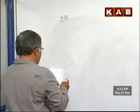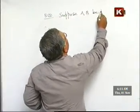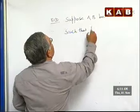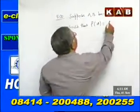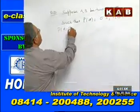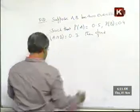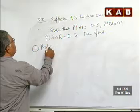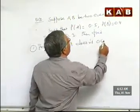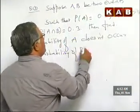Question number 3. Suppose A and B are two events such that probability of A is equal to 0.5, probability of B is equal to 0.4, probability of A intersection B is equal to 0.3. Then find: first, probability of A does not occur; second, probability of B does not occur.